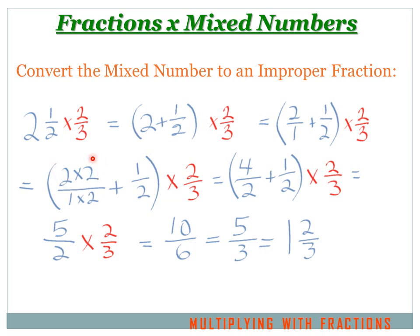2 times 2 over 1 times 2 gives me 4 over 2, and 1 over 2 stays the same. So now I've got a common denominator — 2 on the bottom of both fractions — so I can add them. I've got 4 over 2 plus 1 over 2 equals 5 over 2, and again the times 2 thirds we just carry forward exactly as it is. Now I've got 5 over 2 times 2 thirds. 5 times 2 is 10, 2 times 3 is 6, so my answer is 10 over 6. I can simplify that to 5 over 3 and simplify again to 1 and 2 thirds.